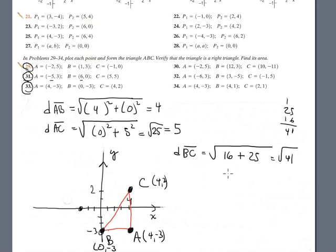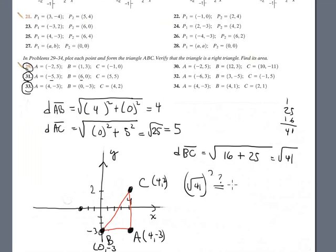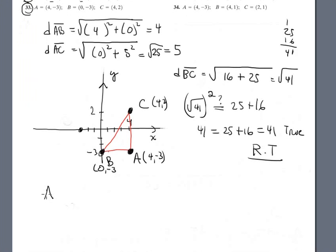Now verification: square root 41 is the largest side. Square root 41 squared equals 41, and it should equal square root 5 squared plus square root 4 squared — that is 25 plus 16, which equals 41. It's true, meaning it is a right triangle. The area is one-half times 4 times 5, which is 20 times one-half, equals 10 square units. Done.